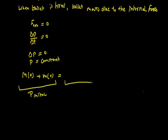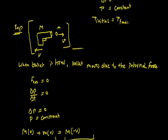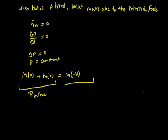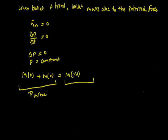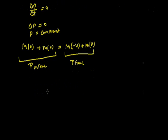For the final momentum: let the direction of the bullet be the positive direction, so the gun moves in the negative direction with speed V, giving it momentum minus MV. The bullet has momentum mv. Setting p initial equal to p final gives zero equals mv minus MV, so the recoiling speed of the gun is V equals mv over M.